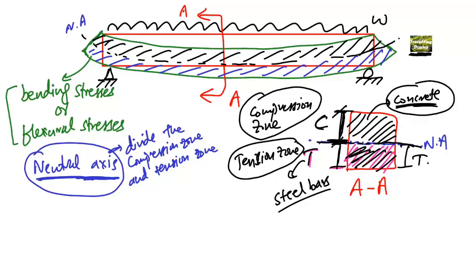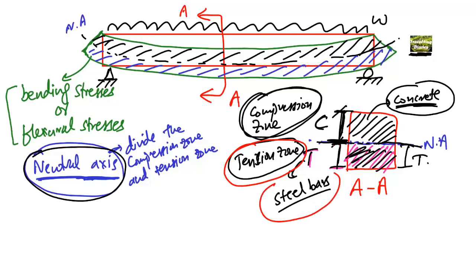To summarize: the neutral axis divides the compression zone and the tension zone. The compression zone is where the beam is under compression, and the tension zone is where the beam is under tension — where we always provide reinforcement bars to increase the tensile capacity. In the compression zone, concrete takes the compressive stresses. Hope you guys understand — don't forget to subscribe for daily civil engineering videos.